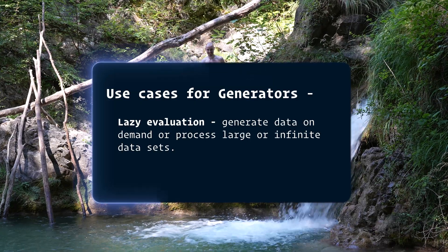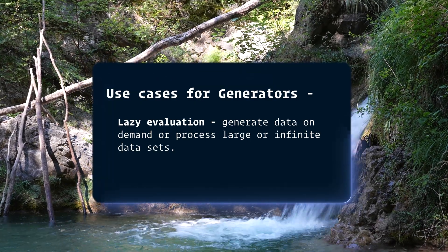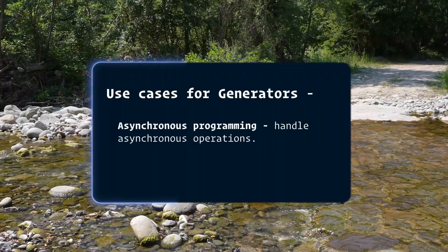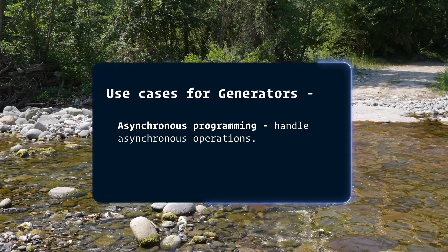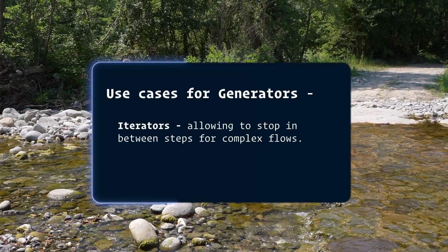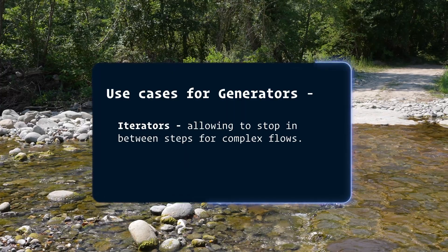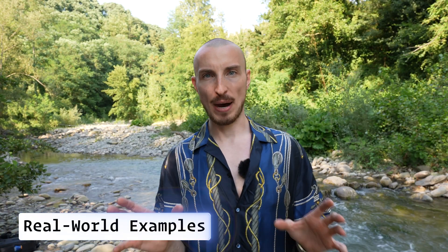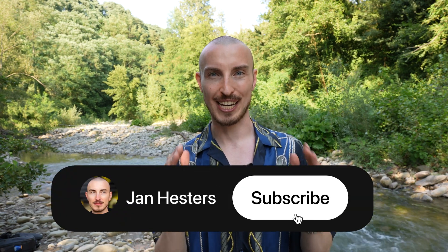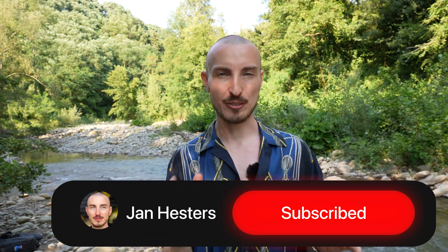There are three main use cases for generators: first, lazy evaluation — generating data or processing large or infinite data sets; second, asynchronous programming — handling asynchronous operations; and third, iterators — when you want to stop between steps for complex flows. You won't see saga examples here as that's for a future video, so subscribe to the channel if you want to see that.